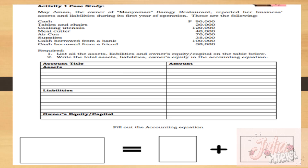Required: list all the assets, liabilities, and owner's equity or capital on the table below. Write the total assets, liabilities, owner's equity, and the accounting equation. You may pause this video while you are answering.